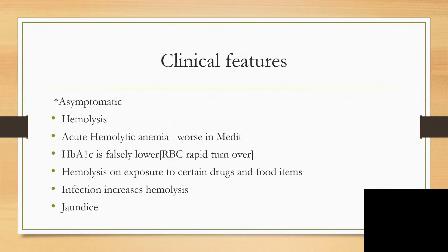When there are symptoms, we find features of hemolysis. Acute hemolytic anemia is very common and is worse in those with the Mediterranean variant. Hemoglobin A1c is falsely lower in these patients — if they have diabetes mellitus and you screen hemoglobin A1c, it will be lower because the red blood cells are rapidly replaced. The three-month test will yield a falsely low value due to rapid red blood cell turnover. Additionally, hemolysis can occur on exposure to certain medications and food items.